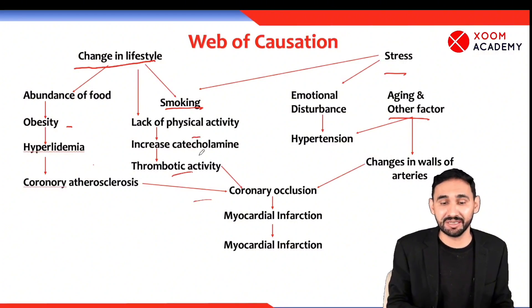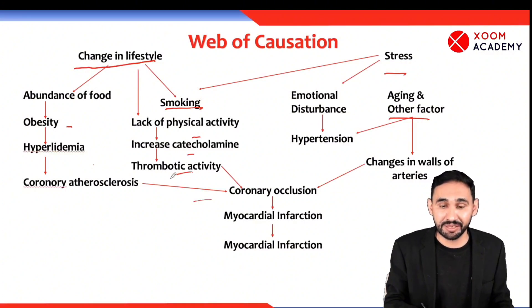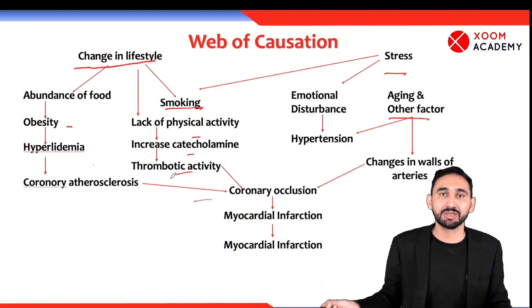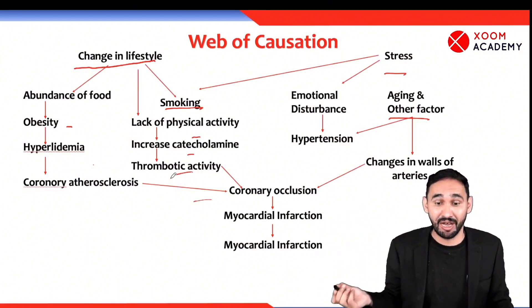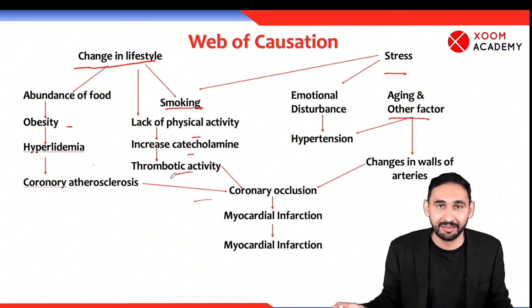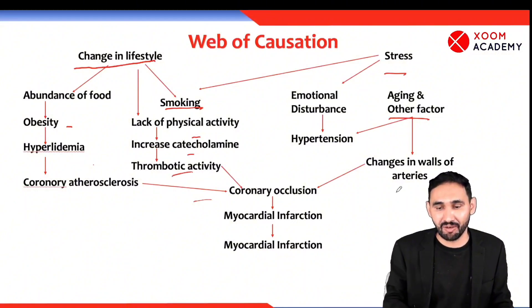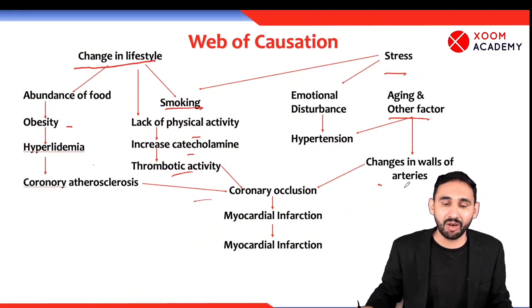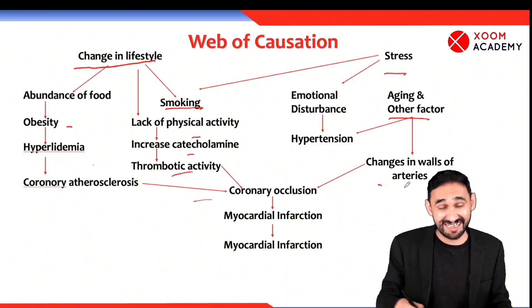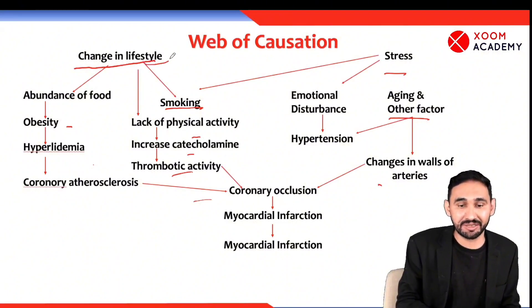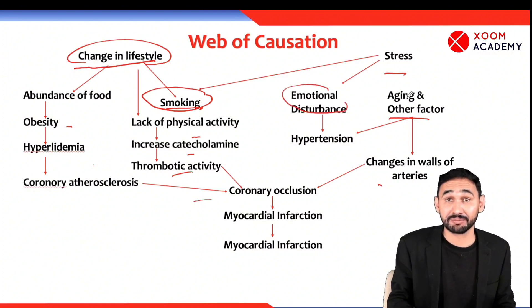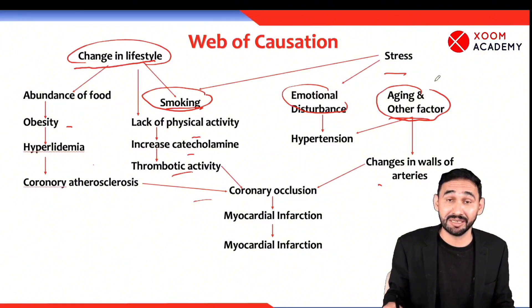When there is lack of physical activity, there is increased catecholamine and increased thrombotic activity, leading to coronary occlusion and ischemic heart disease. Stress is also a risk factor — it can cause emotional disturbance, which raises blood pressure, causing hypertension, which causes coronary occlusion. With aging, when people become old, there are changes in the walls of arteries — they become thick, there is occlusion in blood circulation, which causes myocardial infarction. All these factors integrate and cause the disease.